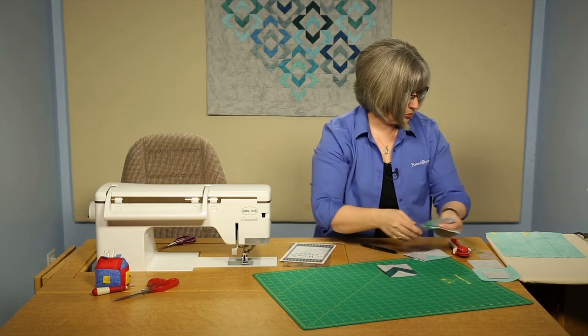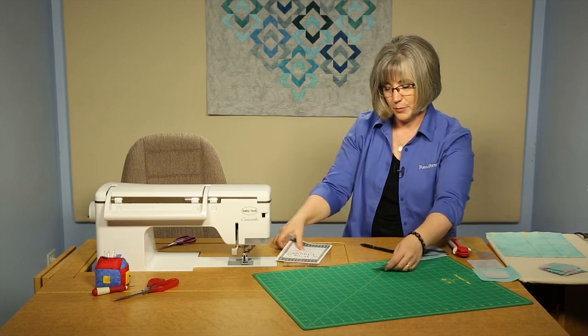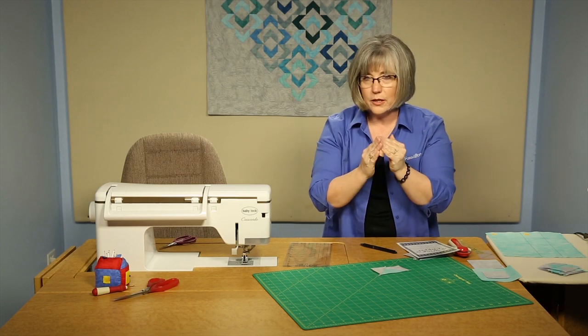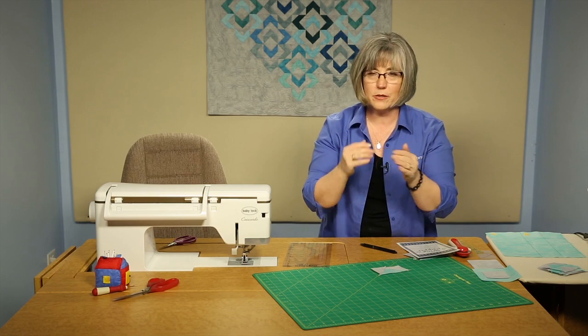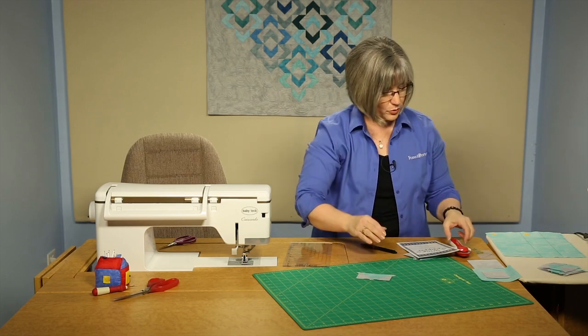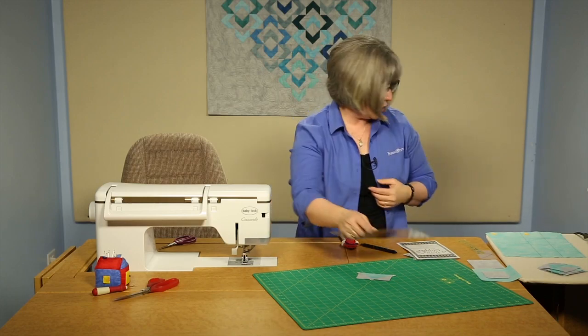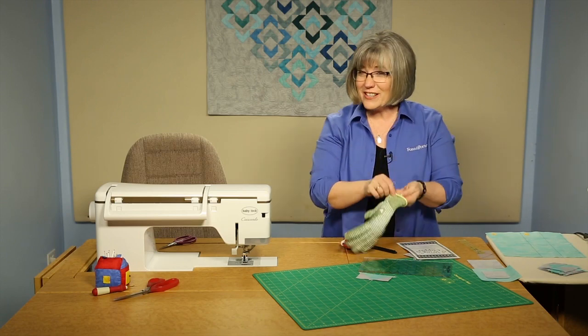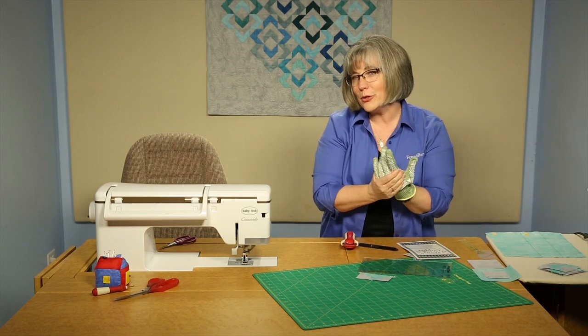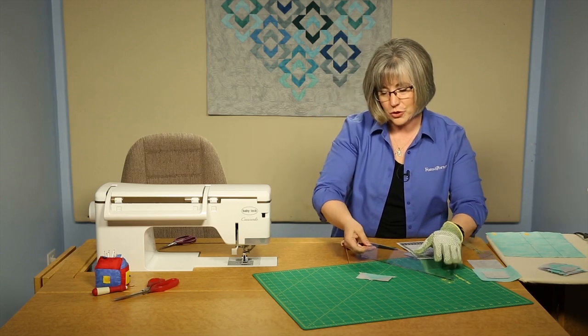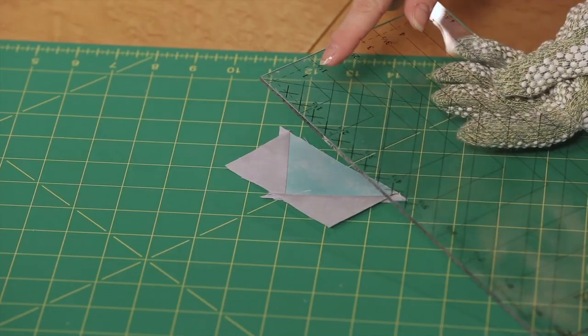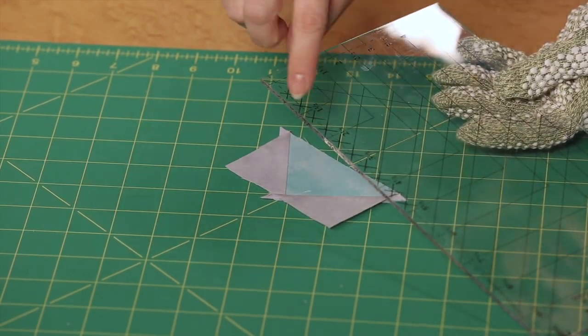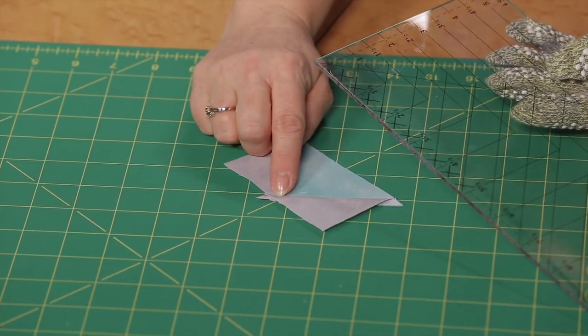I do want to step back one step. I almost forgot about the trimmer. These are slightly oversized. Flying geese blocks tend to get a little wonky as we sew them because we're working with bias directions of stitching. So there is a tool that you can use to go in and trim those blocks up. And if you look at how many flying geese are in this little wall hanging, you'll understand why, if they're all really precise, they fit together nicely. For this trimmer, there are lines that will tell you where the finished size of your block you want, and it will also give you a crosshatch of where to lay this little V on your block.